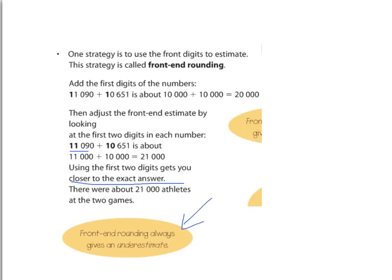Note, however, that front-end rounding always gives you an underestimate. If we look at 11,090 and 11,000, we've rounded down — we've made our number smaller, so our answer also has to be smaller. Same thing here: 10,651 became 10,000, also made smaller. So there's no way our answer can be an overestimate. It is an underestimate — our number is lower than what the actual answer would be.